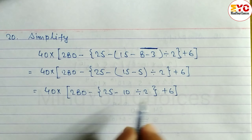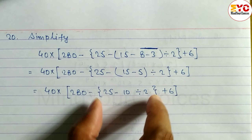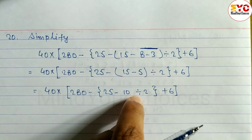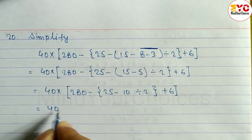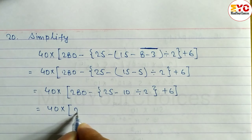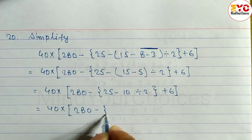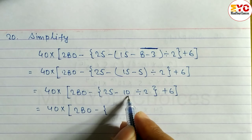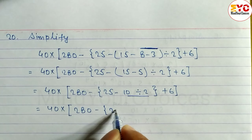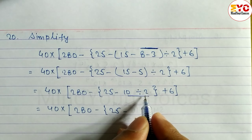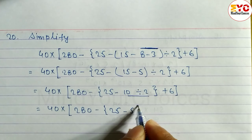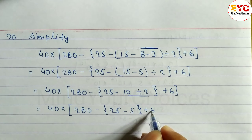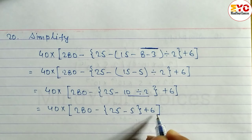Then, first bracket: divide and subtract. First you have to divide, then subtract. So we write here: 280 minus. Now divide: 25 by 25, minus. Then divide by 5, so write 5. Then bracket of plus 6, so plus 6. Then big bracket — up to here.